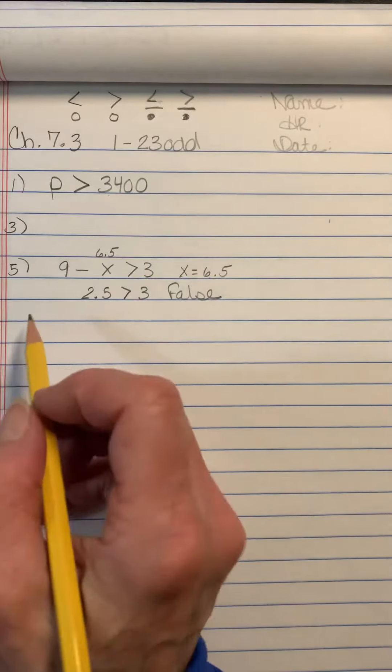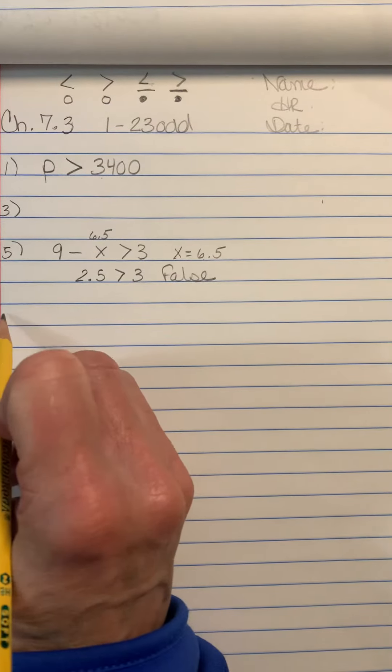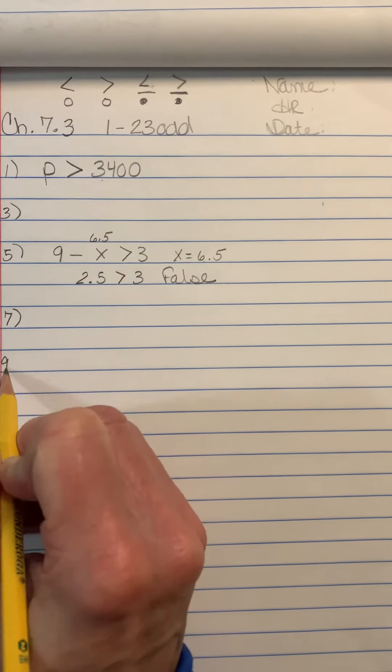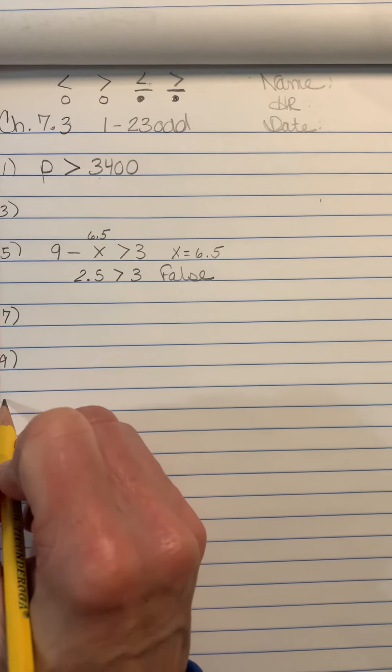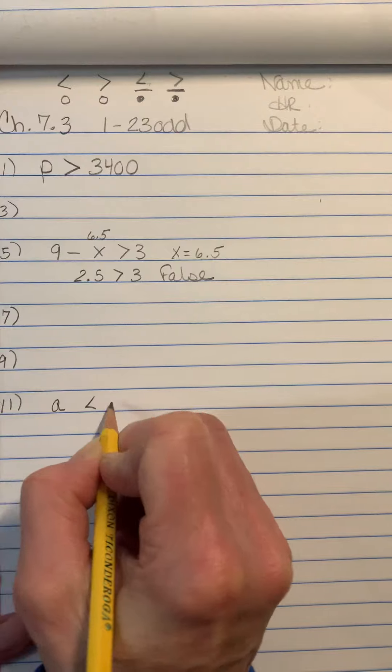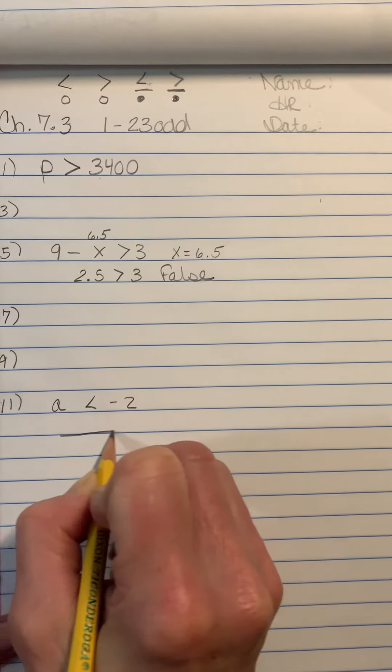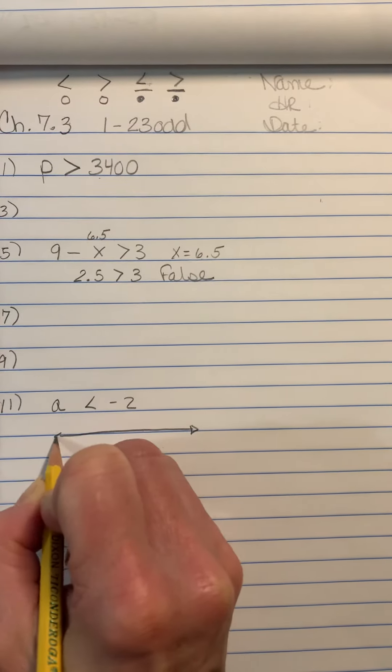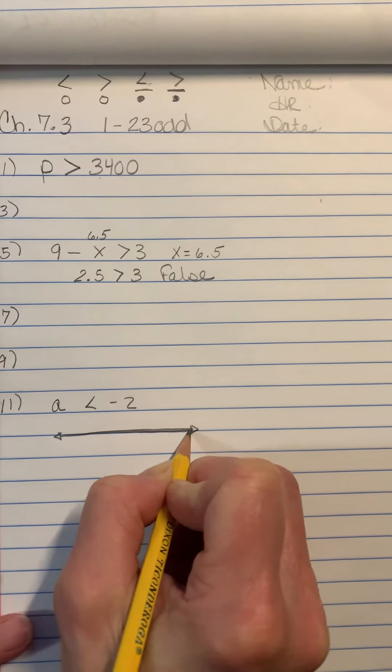And so that's how you're going to do 5, 7, and 9. And then I'm going to come down to 11 where you have to graph it. So it says a is less than negative 2. Now this is all you have to do if you don't print off the sheet. Use the blue line for your number line.